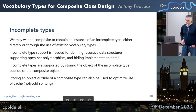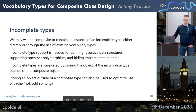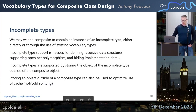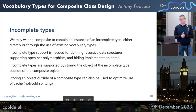We may want to compose or contain an instance of an incomplete type, either directly or for use with existing vocabulary types. Incomplete type support is needed for defining recursive data structures, supporting open-set polymorphism, and for hiding implementation details. Incomplete types are supported by storing the object of an incomplete type outside of the composite type. Storing an object outside the composite type can also be used to optimize cache usage — so-called hot-cold splitting, where frequently accessed members fit on the main cache line and infrequently accessed data is placed elsewhere.